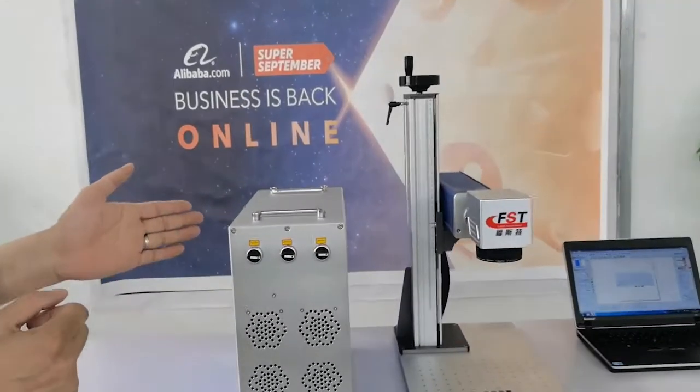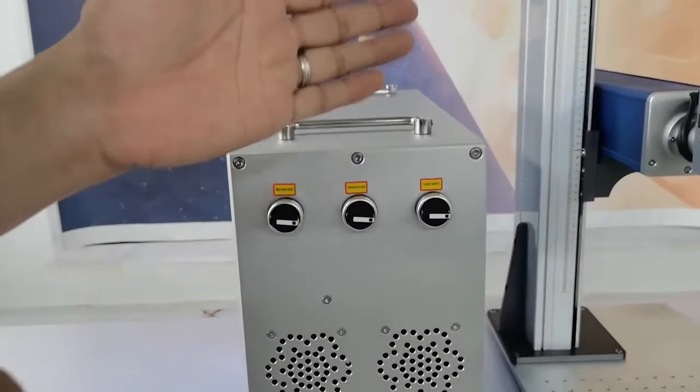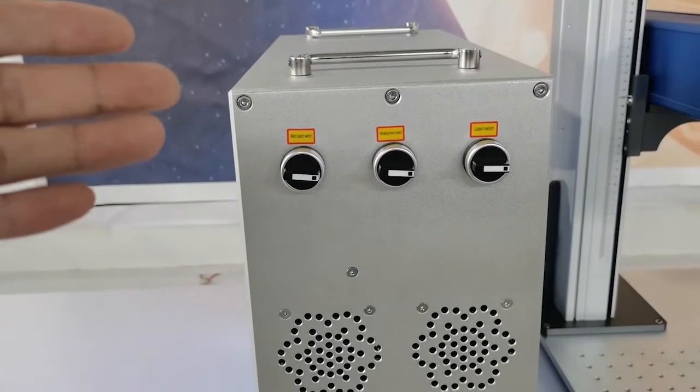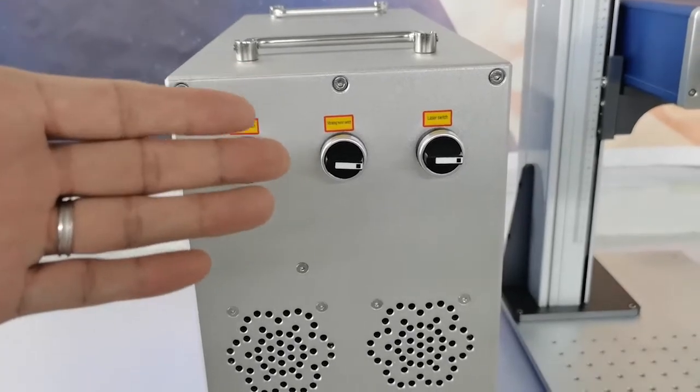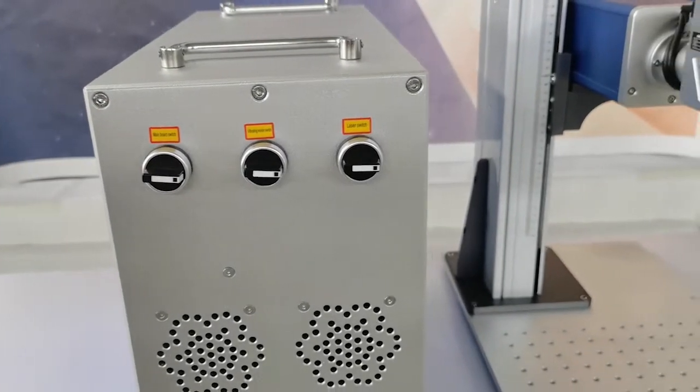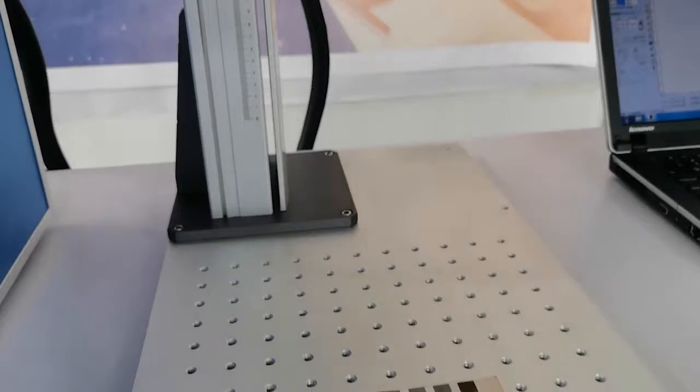The biggest advantage for this machine is they can mark color. They can mark black color on white plastic. Also, they can mark all kinds of color on the stainless steel.